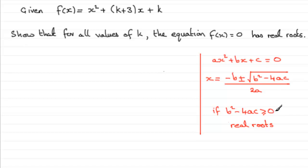And that is the point about this question. So what we've got to say is that for real roots, we've got to show that b² - 4ac, the discriminant, must be greater than or equal to 0.